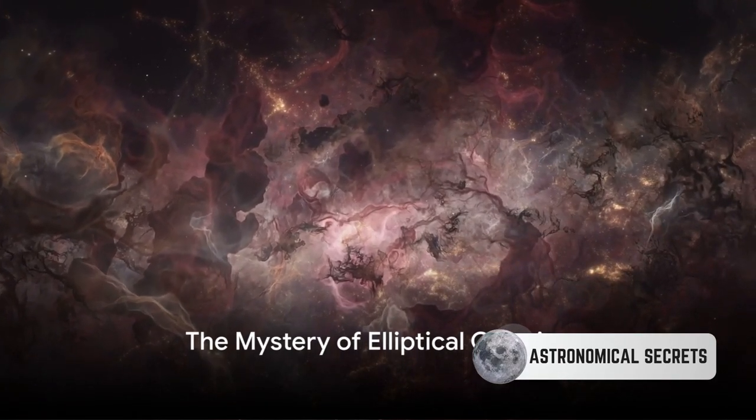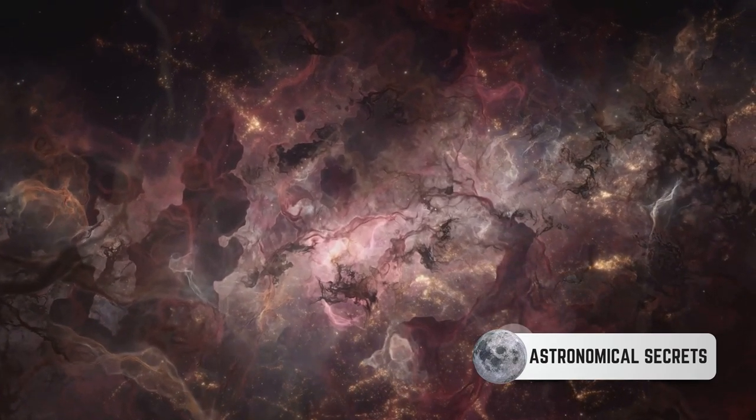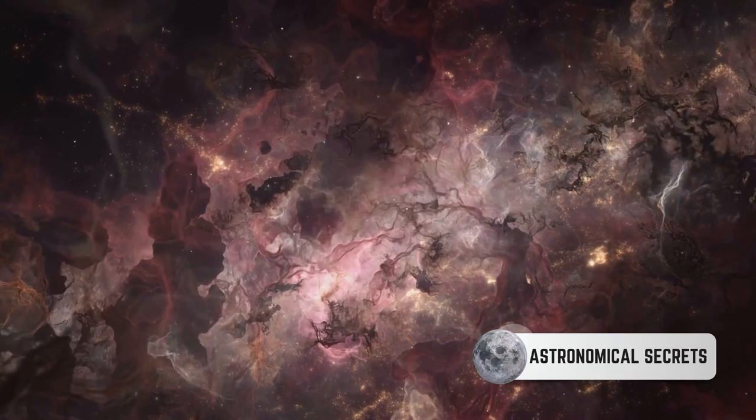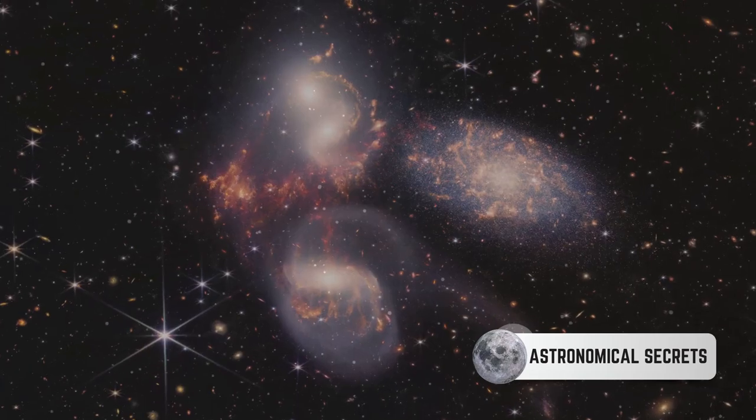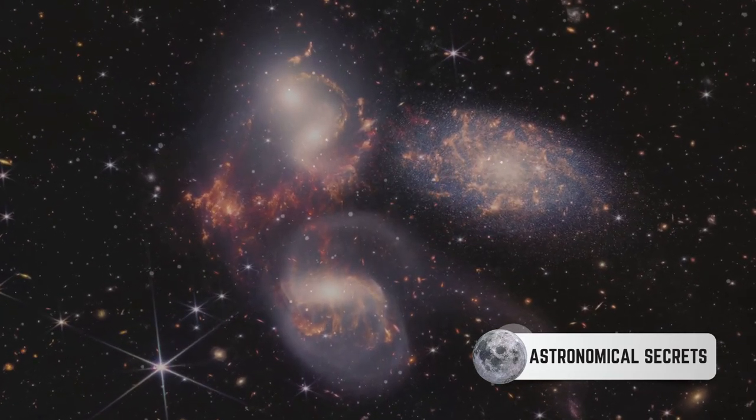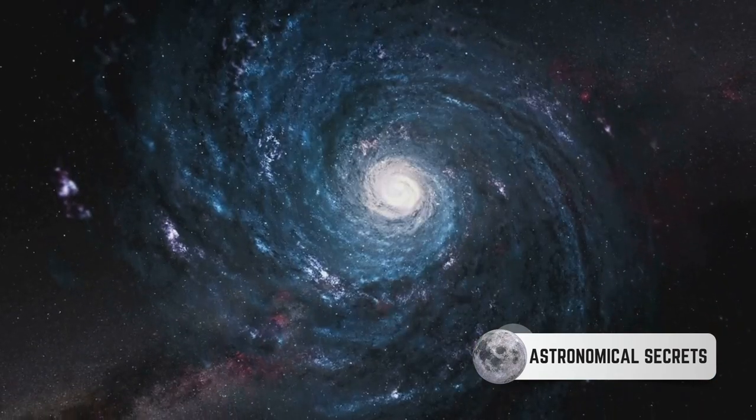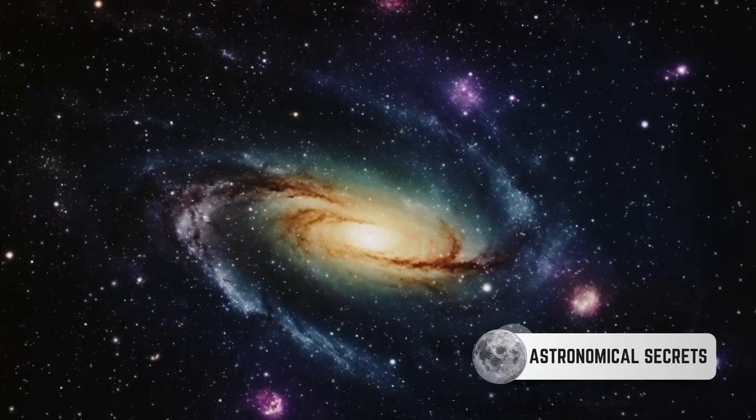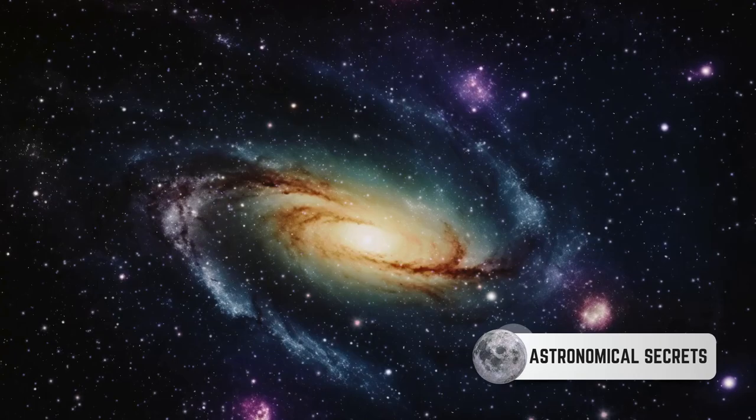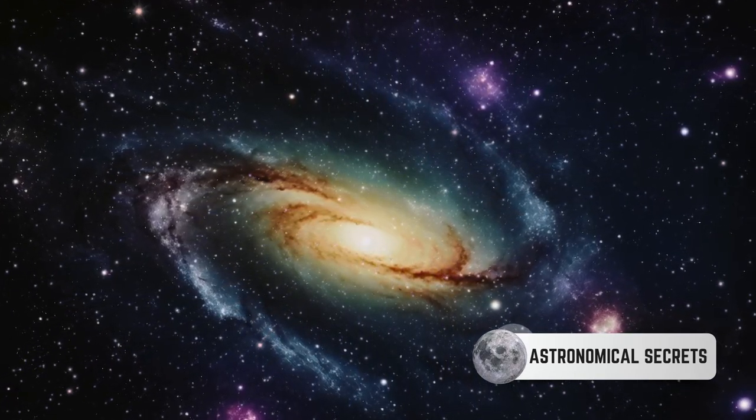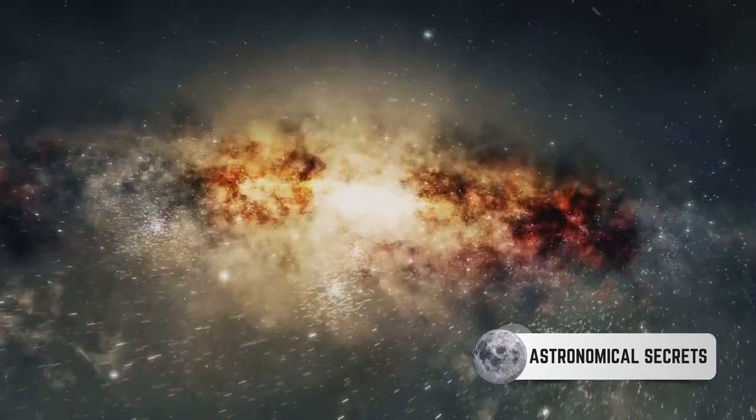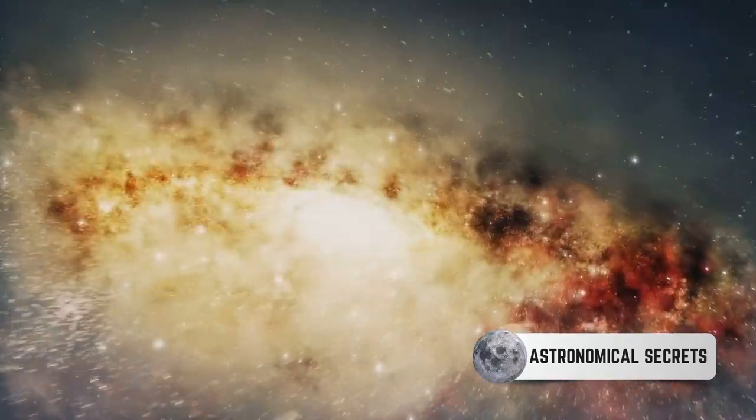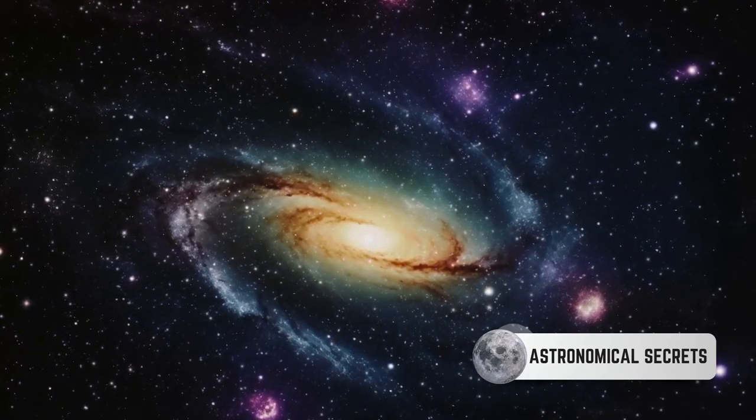Elliptical galaxies are a cosmic mystery just waiting to be solved. These celestial giants, teeming with old stars and sparse in cosmic dust, are a puzzle that scientists have been trying to piece together for decades. Unlike their spiral counterparts, elliptical galaxies seem to have stopped birthing new stars. But why? The lack of star formation in these galaxies is intriguing. Typically, galaxies are teeming with clouds of gas and dust, the essential ingredients for star creation. However, elliptical galaxies are noticeably lacking in these ingredients. But the question remains, where has all the gas and dust gone?